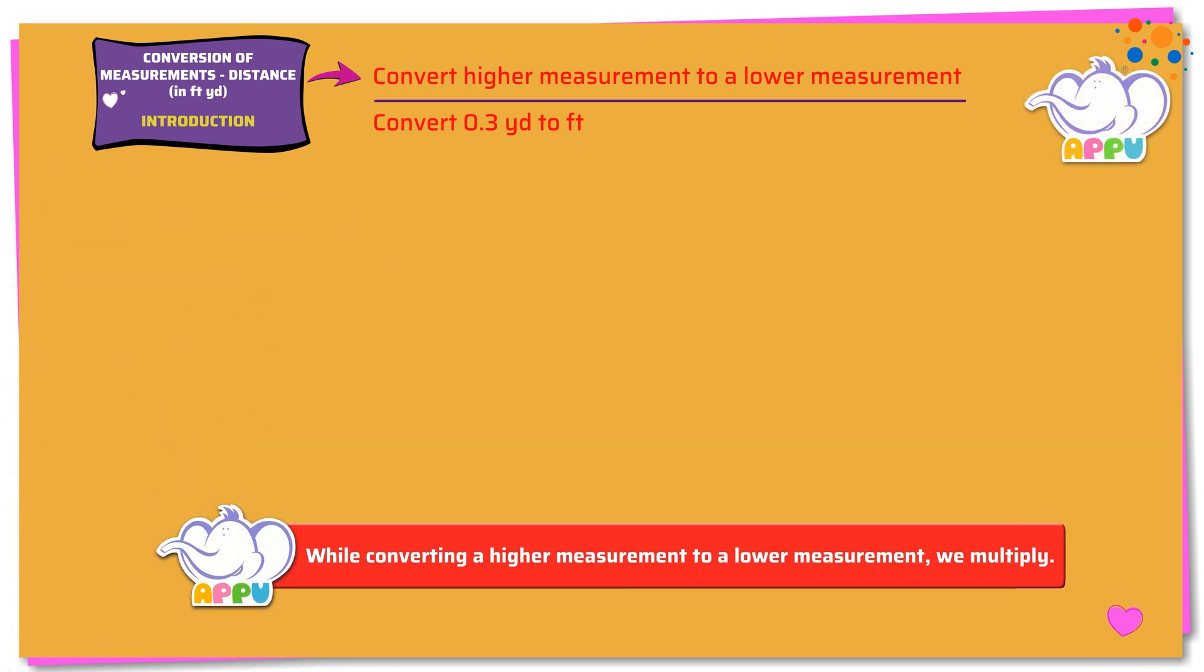Here we need to find how much is 0.3 yards in feet. We know that 1 yard equals 3 feet. Multiplying both sides by 0.3, we get 0.3 times 1 yard equals 0.3 times 3 feet. 0.3 times 3 feet equals 0.9 feet.